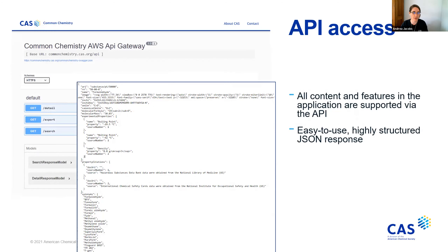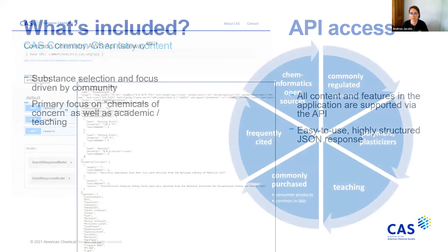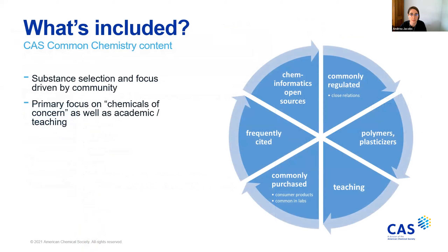The Common Chemistry API offers the same information in a structured JSON format. Programmatic access is available to support a variety of batch-oriented use cases for searching and analyzing chemical information, as well as for teaching and learning of cheminformatics. The nearly 500,000 substances selected for inclusion were chosen in collaboration with the community group that first proposed this to CAS. We focused especially on chemicals of concern — those that appear on global regulatory lists — as well as substances relevant in academic and teaching use cases, including several homologous series that often appear in early undergraduate chemistry classes.